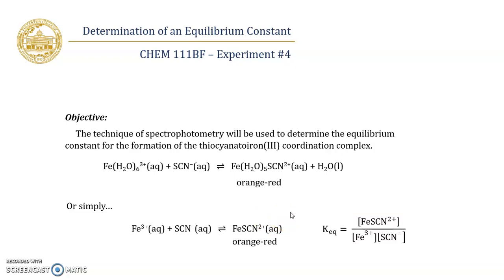The equilibrium constant K equals the equilibrium concentration of the iron-thiocyanate complex divided by the concentrations of iron(III) and thiocyanate, also at equilibrium.